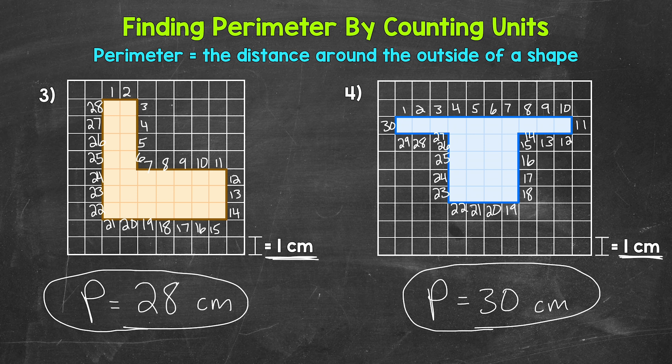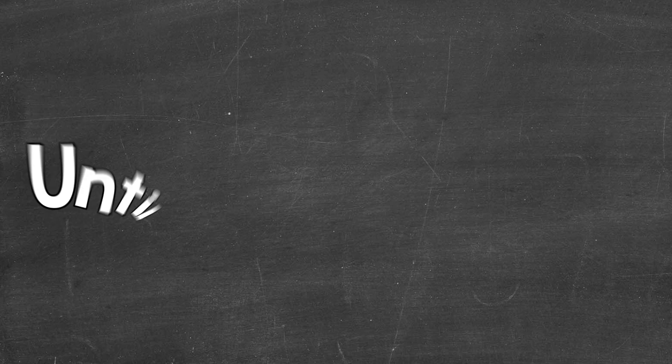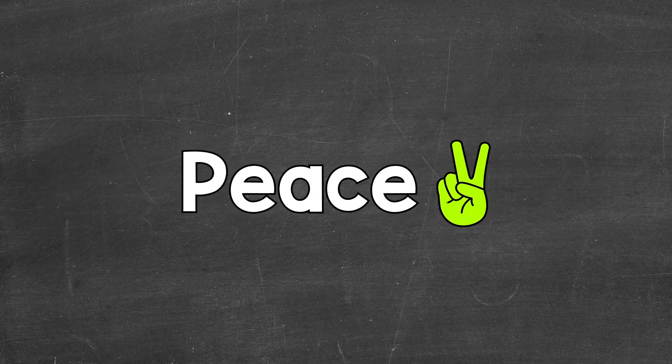So there you have it. There's how to find the perimeter of a composite figure, a composite shape, by counting units. I hope that helped. Thanks so much for watching. Until next time, peace.